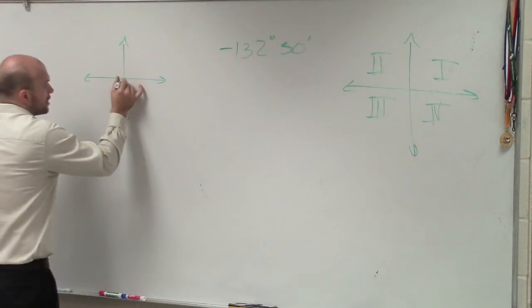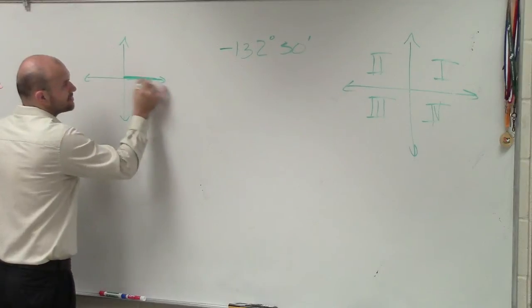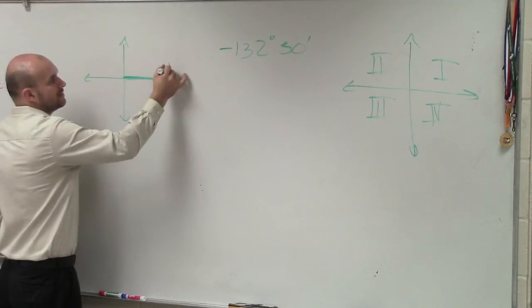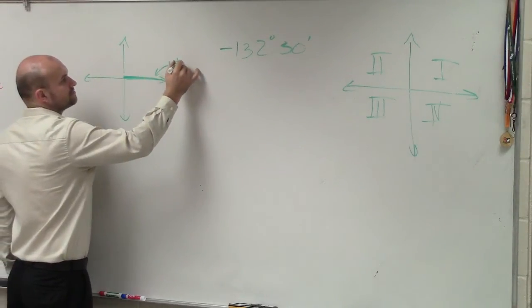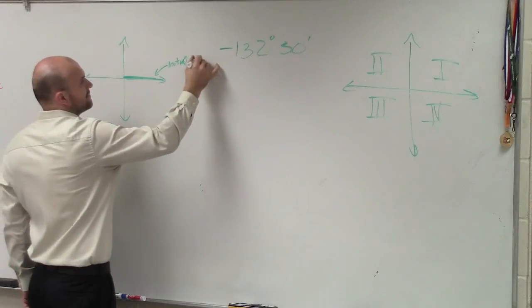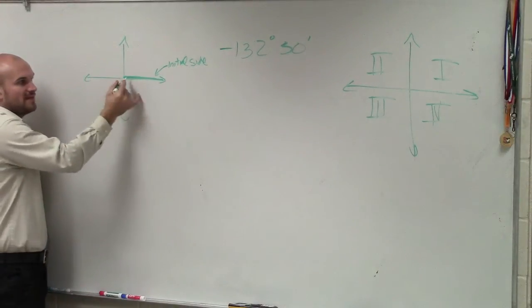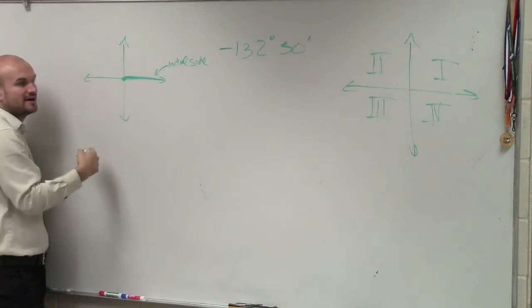All angles, if you guys remember, are going to start at what we call our initial side, which is right here. That's your initial side. Then we're going to rotate another ray from that initial side from the vertex to find our other ray.